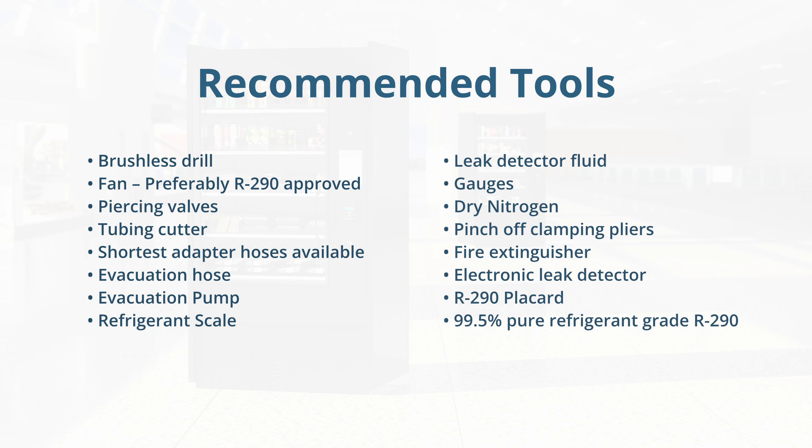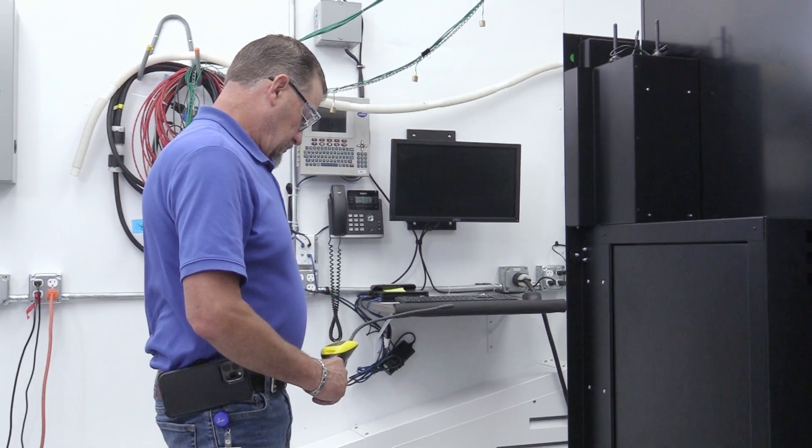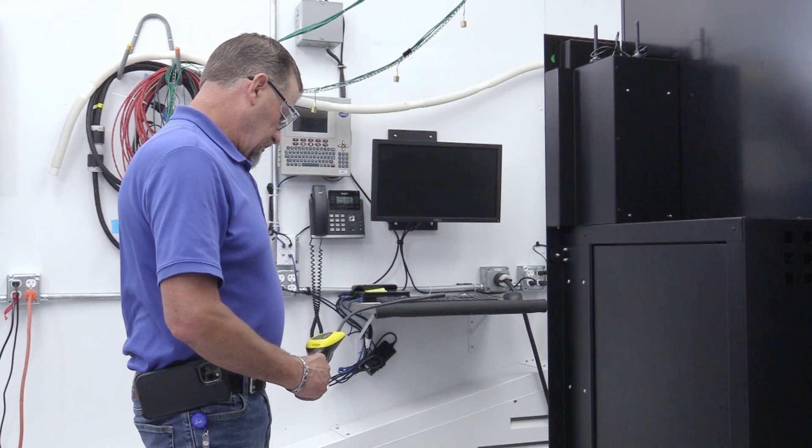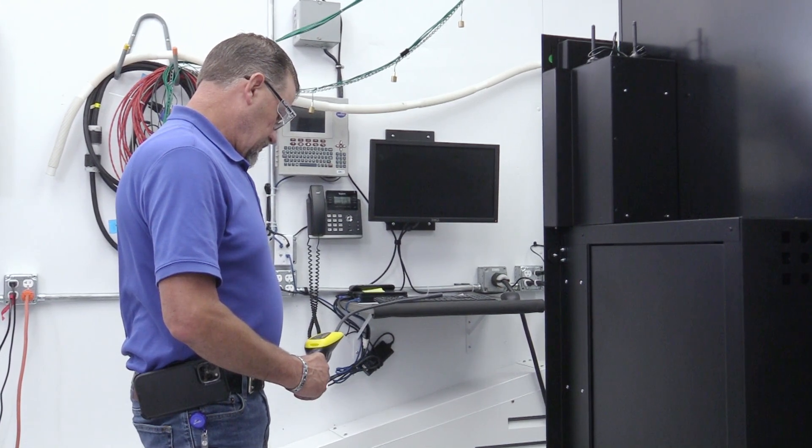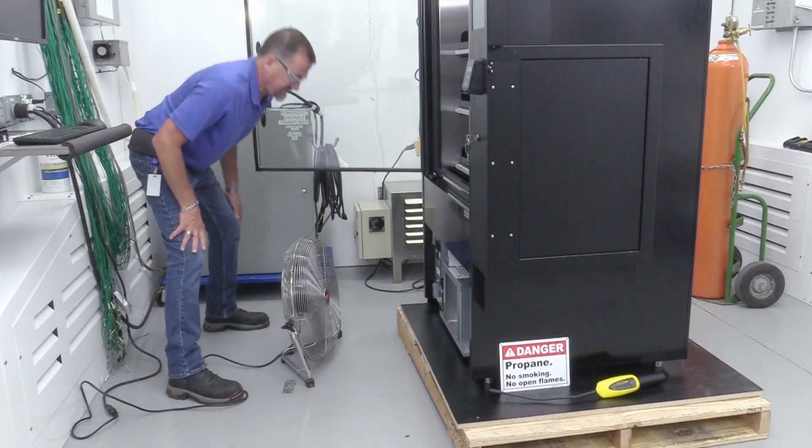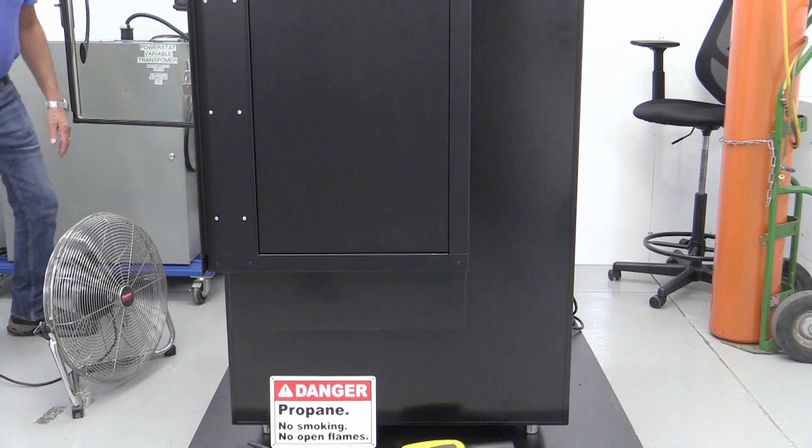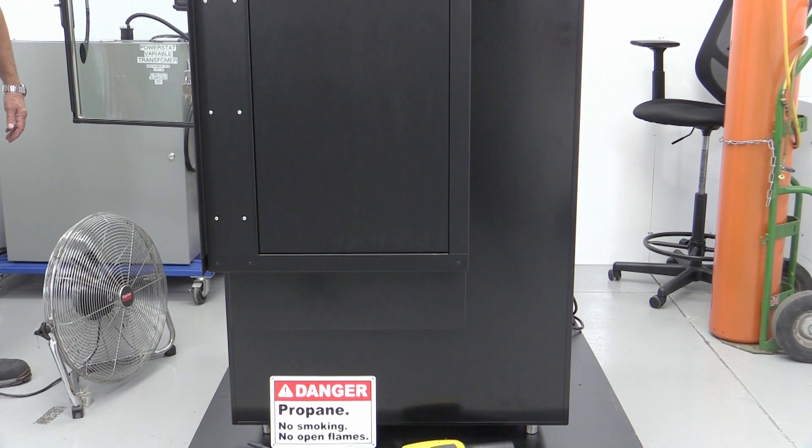To begin service of the condensing unit of an R290 unit, turn off the equipment and unplug it. Turn on the electronic leak detector and ensure that there's no combustible gas in the area before performing service. Turn on the fan and point it at the service area. We recommend an R290 approved fan. If the fan is not R290 approved, keep it 10 feet away from the service area.